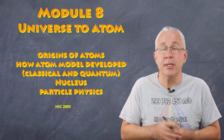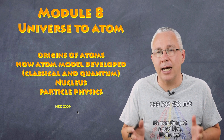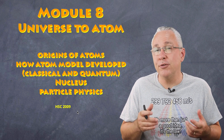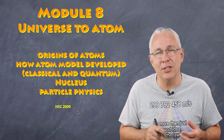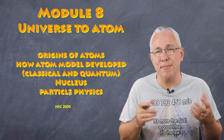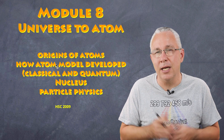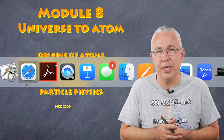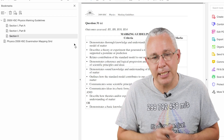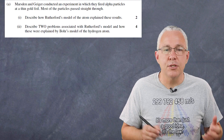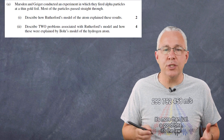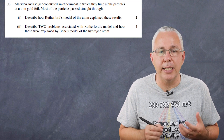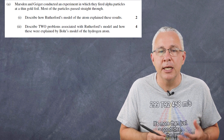Before I start, I really value your support. If you're able to click that link in the description below and buy me a coffee, I'd really appreciate it — it helps continue to support the work that I do. So let's get started. Our first question is about Marsden and Geiger doing an experiment in which they fired alpha particles at a thin gold foil, and most of the particles passed straight through.